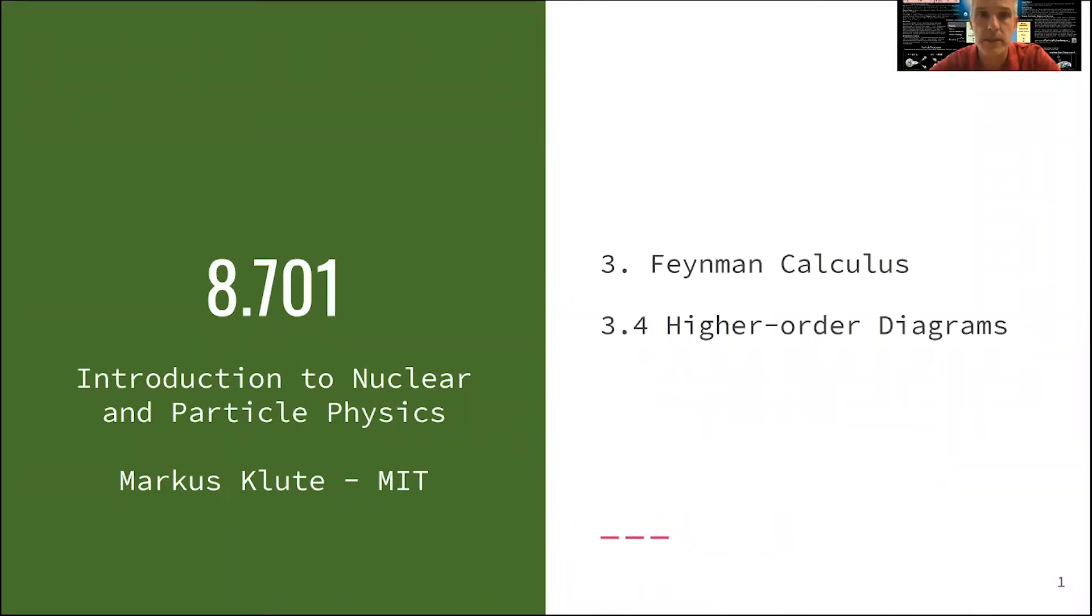In the previous lectures, we studied how to read Feynman diagrams, how to calculate amplitudes and phase space. And we are able to use this using Fermi's golden rule in order to calculate lifetimes and cross-sections.